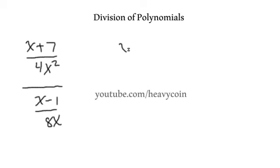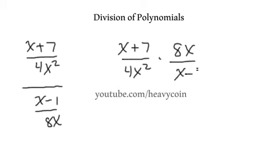So I'm going to rewrite this as x plus 7 over 4x squared times 8x over x minus 1. I guess I could write this here like this is equal to that. Alright. Now,